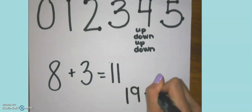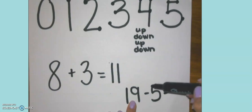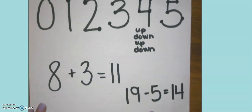I could have 19 minus 5, 19, 18, 17, 16, 15, 14. Once I know where those touch points are, I can very quickly add and subtract using them.